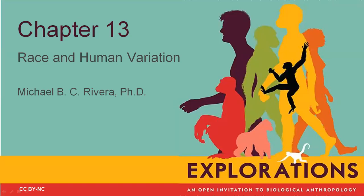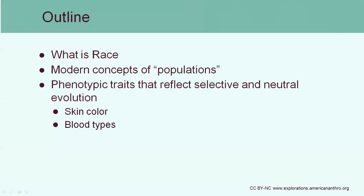Welcome back to Physical Anthropology. This week, we're going to be looking at modern human variations. Chapter 13 will focus on race and human variation and introduce you to this topic, and then Chapter 14 will go into a lot more detail on some specific examples. Topics we're going to cover include the definition of race, modern concepts of populations, and phenotypic traits that reflect selective and neutral evolution, including skin color and blood types.